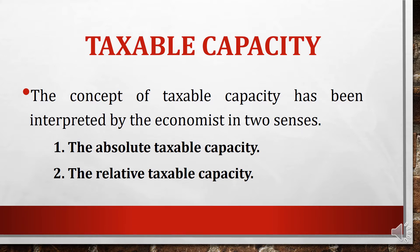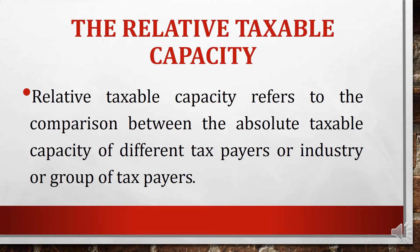Taxable capacity can be categorized into two: the absolute taxable capacity and the relative taxable capacity. We already learned what is meant by absolute taxable capacity — the maximum tax-paying capacity of the economy, or a country as a whole, or a region, or an industry, or a group of individuals, is referred to as absolute taxable capacity.